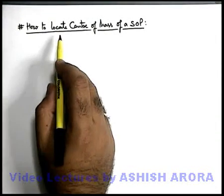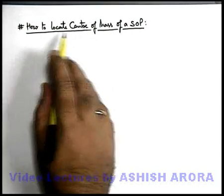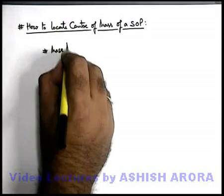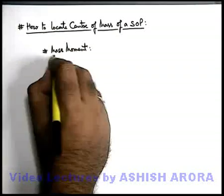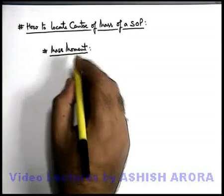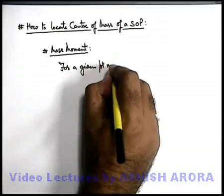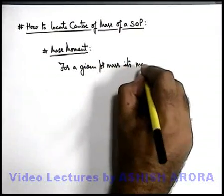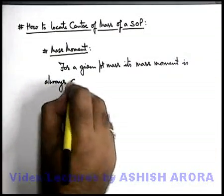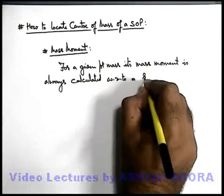Now let's discuss how to locate the centre of mass of a given system of particles. For localization of centre of mass, we'll first study a term which is very important — we call it mass moment. This is a very important term in localization of centre of mass of a system of particles. The first thing you must know about mass moment is that for a given point mass, its mass moment is always calculated with respect to a given reference point.